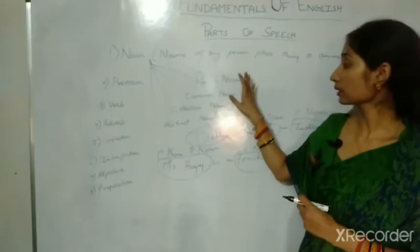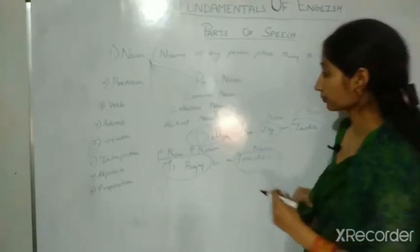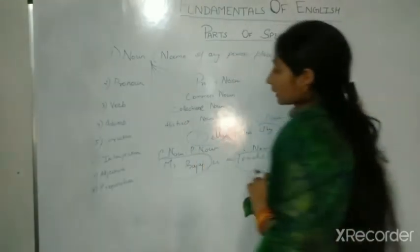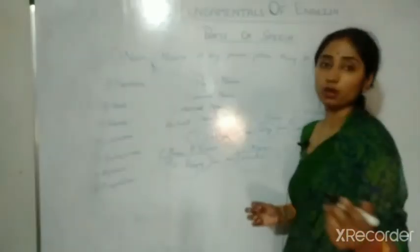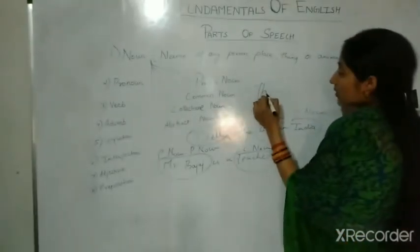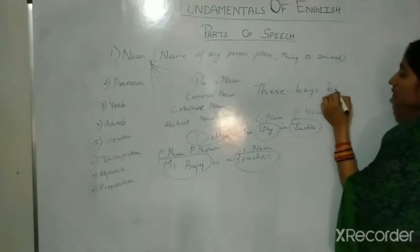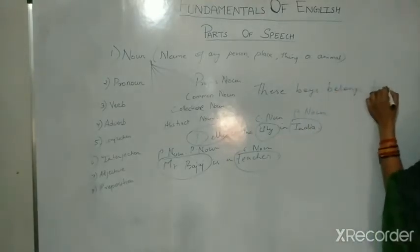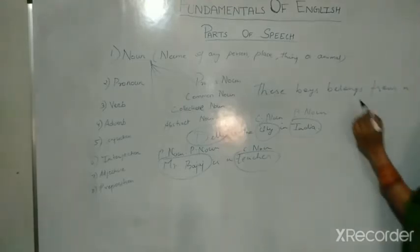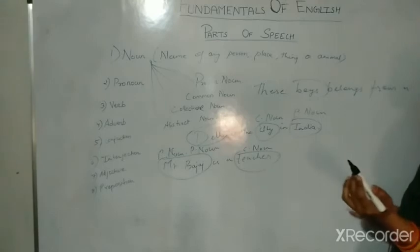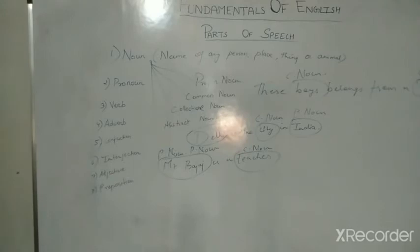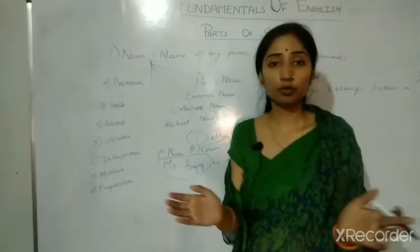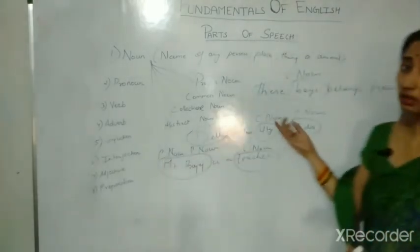Now let's talk about collective noun. A collective noun refers to a group of things. For example: these boys belong to a class. Boys can be any boys, so boys is a common noun. Class is a collective noun because a class is formed from a group of people.